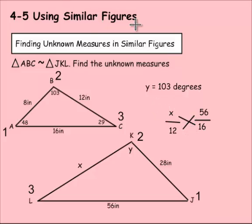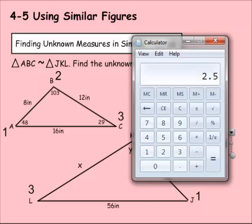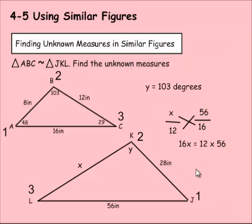So now I can cross multiply and solve. X times 16 equals 12 times 56. So 12 times 56 equals 672.